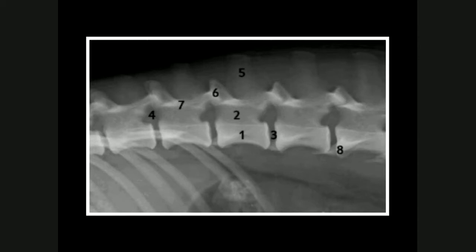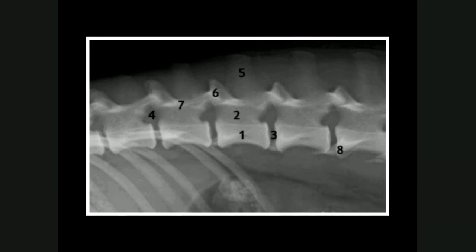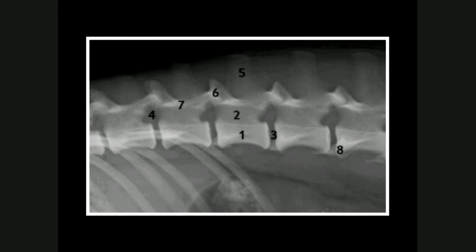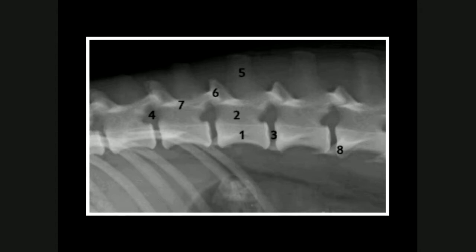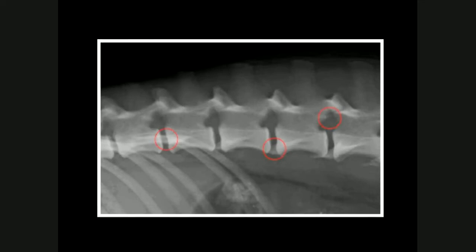On this slide there's a self-quiz where you can name the structures labeled one to eight. The answers are: number one is the vertebral body, number two is the pedicle, number three is the intervertebral disc space, number four is the intervertebral foramina, number five is the dorsal spinous process, number six is the articulation facets making up the joint, number seven is the lamina, and number eight is a transverse process.